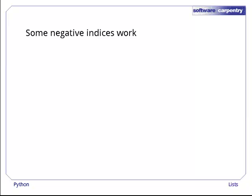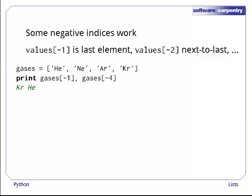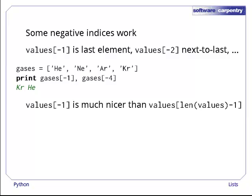We said earlier that list indices start at 0, but in fact, some negative indices work as well. In Python, values of negative 1 is the last element of the list, values of negative 2 is the next to last, and so on, counting backward from the end of the list. For example, here's our list of gases again. As you can see, element negative 1 is krypton, the last in the list, and element negative 4 is helium. This notation is easier to read than the long-winded alternative, which means programmers are less likely to make mistakes with it.